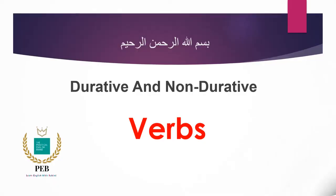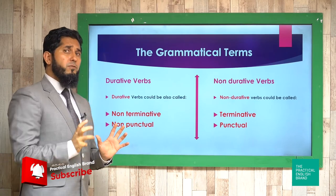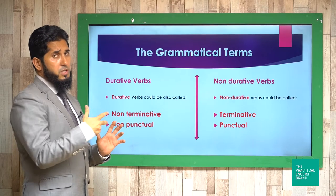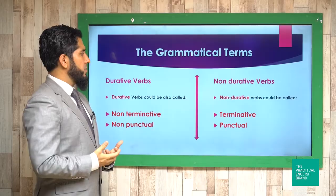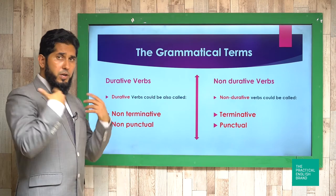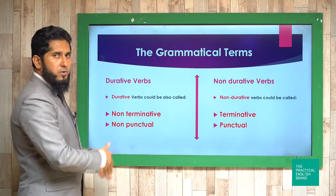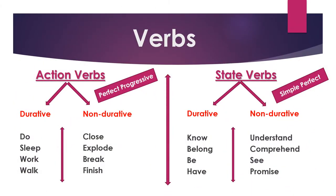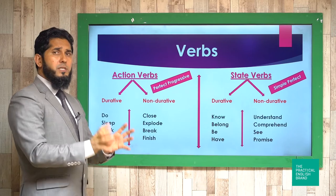Mr. Feroz Khan Safai suggested that many English learners and teachers have problems with durative and non-durative verbs, so I decided to do some research and make this complicated point very easy and comprehensive. You can also call durative verbs 'non-terminative' or 'non-punctual' verbs, and non-durative verbs 'terminative' or 'punctual' verbs — so don't be confused if you hear those terms.